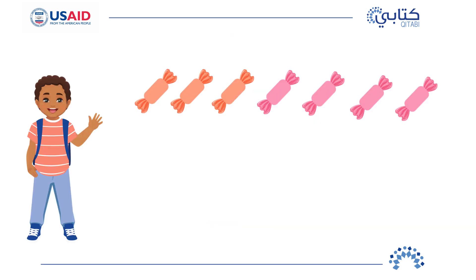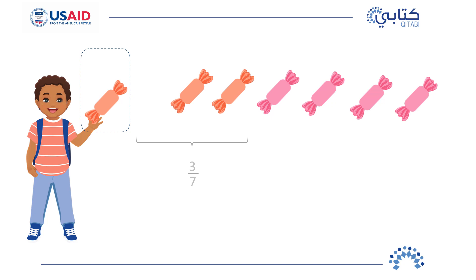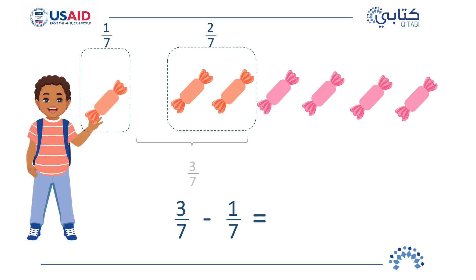Now look at these sweet candies. What fraction of the candies are red? Three-sevenths of the candies are red. Take one red candy — what fraction of the whole candies is this? One-seventh. What fraction of the red candies is left? Two-sevenths! Let's write the equation that represents this: three-sevenths minus one-seventh equals two-sevenths.